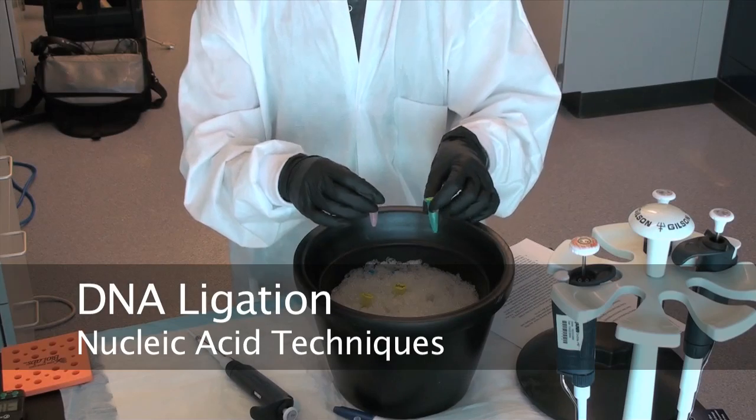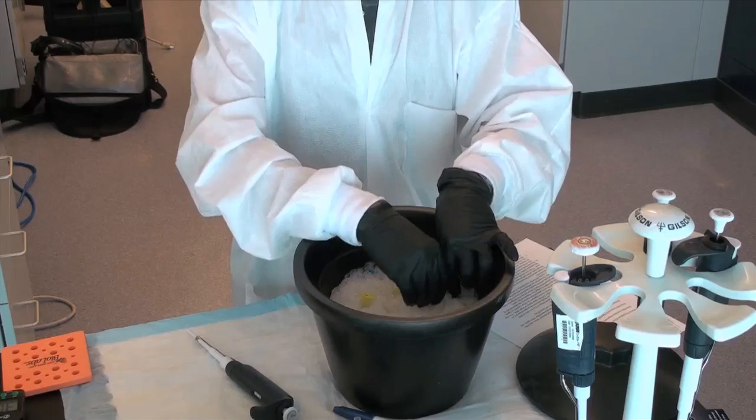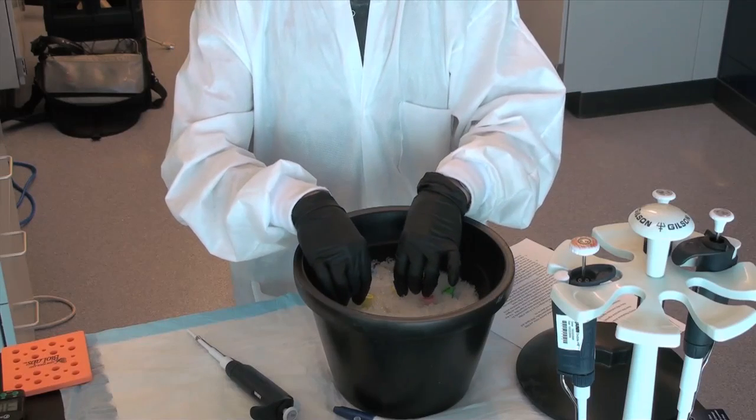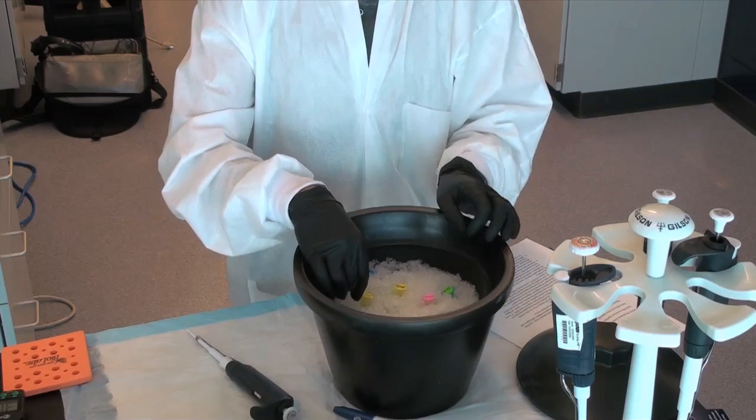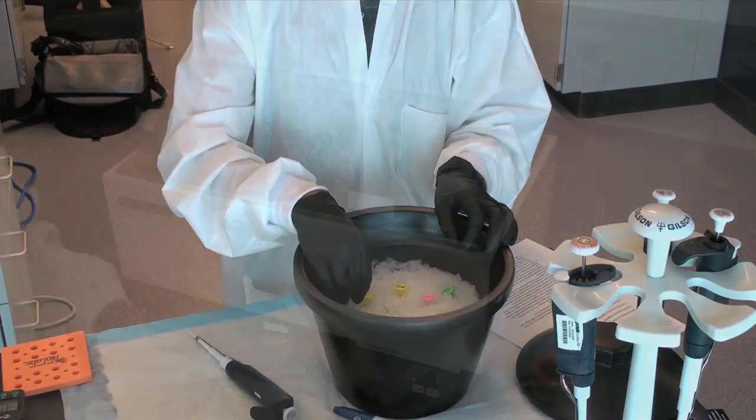DNA ligation. Step 1: Take restriction-digested and enzyme-deactivated plasmid vector and DNA insert, antarctic phosphatase, antarctic phosphatase buffer, DNA ligase, and ligase buffer out of negative 20 degrees Celsius freezer and place on ice.